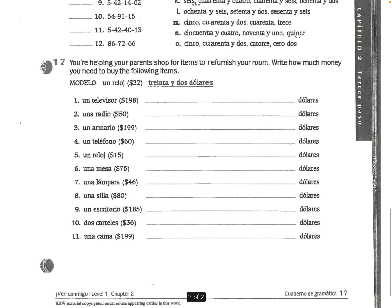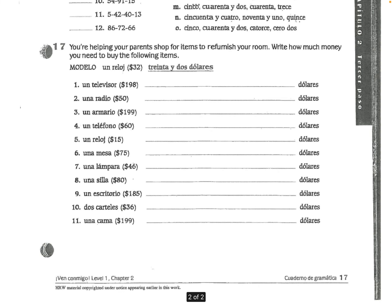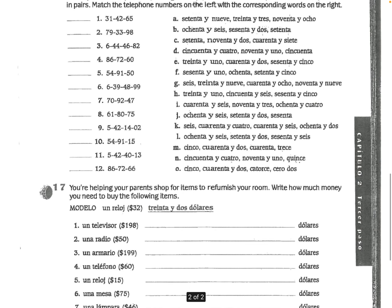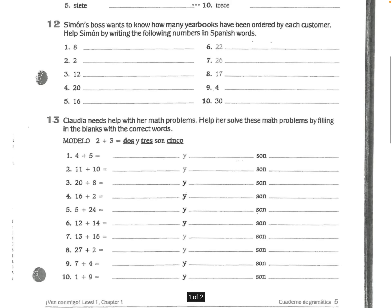So remember, yesterday I talked about the number ciento. When you have more than 100, you use ciento. So like un televisor, it would cost $198 — you write ciento noventa y ocho. So you're spelling those numbers out. Do your best. You can work together and use your vocab list, and you'll submit this.